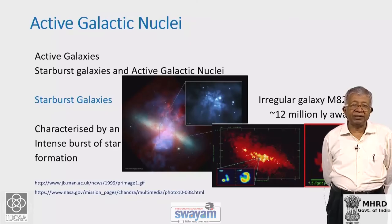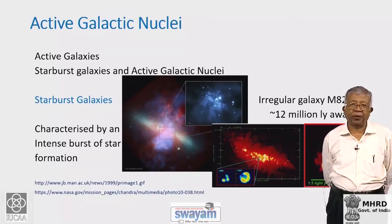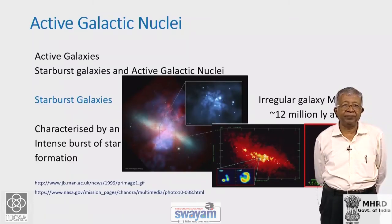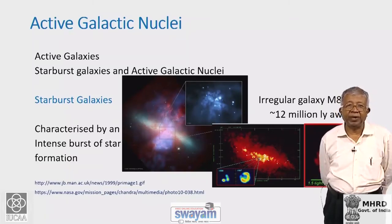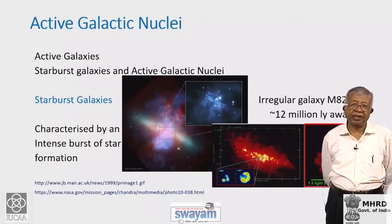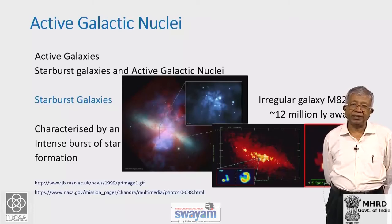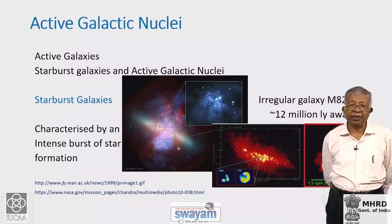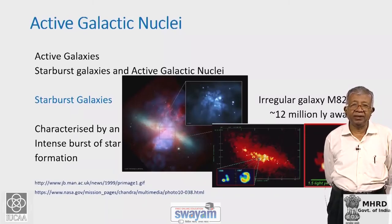Active galaxies can be broadly classified into two categories: starburst galaxies and active galactic nuclei. In a galaxy like our own Milky Way, star formation takes place at a rate of about one to two solar masses per year. But starburst galaxies are ones where the star formation rate is much higher — it could be hundreds of thousands of times larger than that of our galaxy.